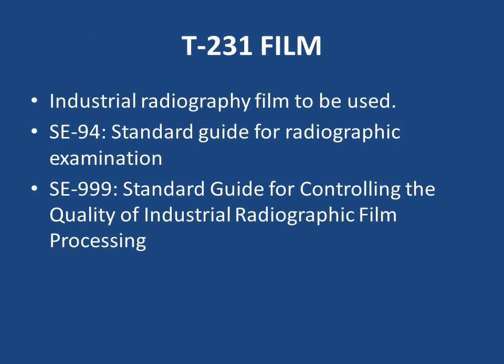T-231: Film. Industrial radiography film is to be used for radiographic examination. The references for radiographic examination and film processing are: SE-94 (Standard Guide for Radiographic Examination) and SE-999 (Standard Guide for Controlling the Quality of Industrial Radiographic Film Processing).